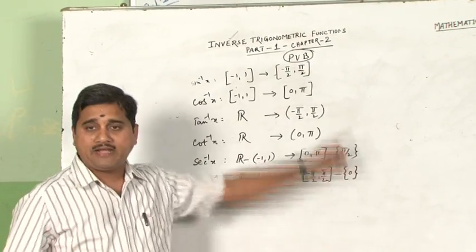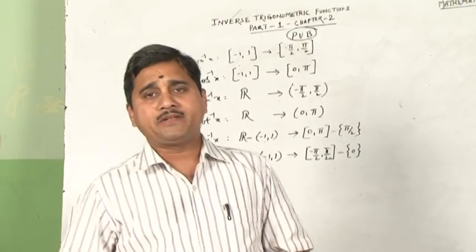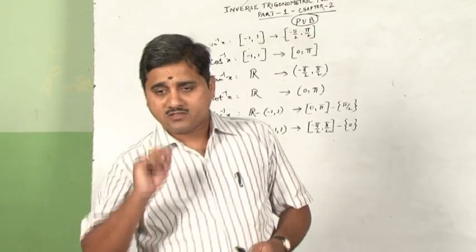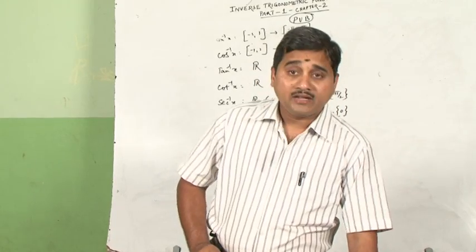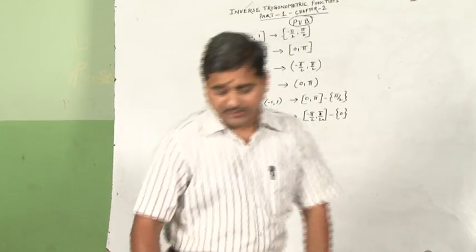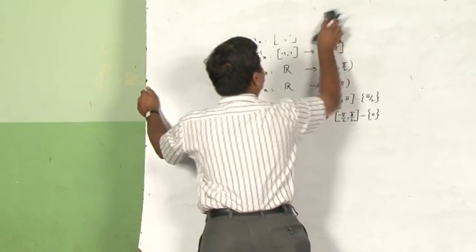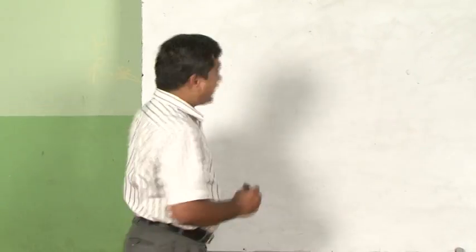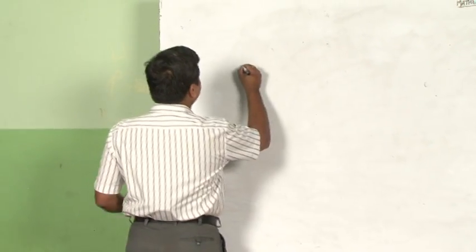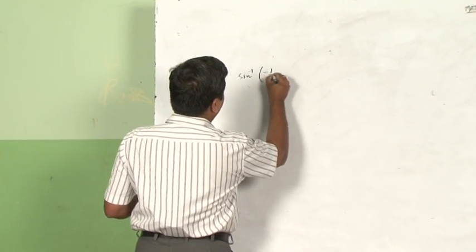These principal value branches we will now use in identifying the principal values of functions we are going to solve under exercise 2.1. Let us take a small problem: sin inverse of minus half.